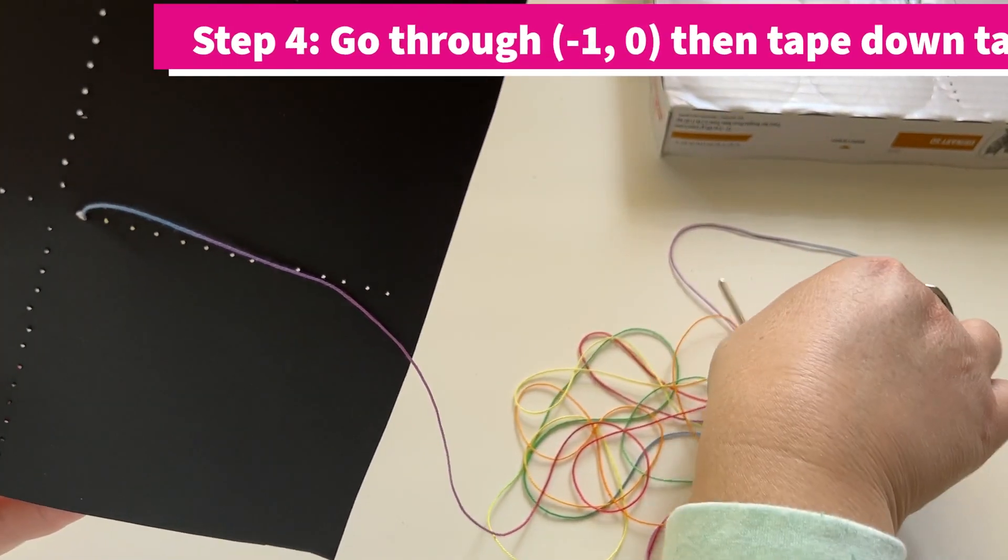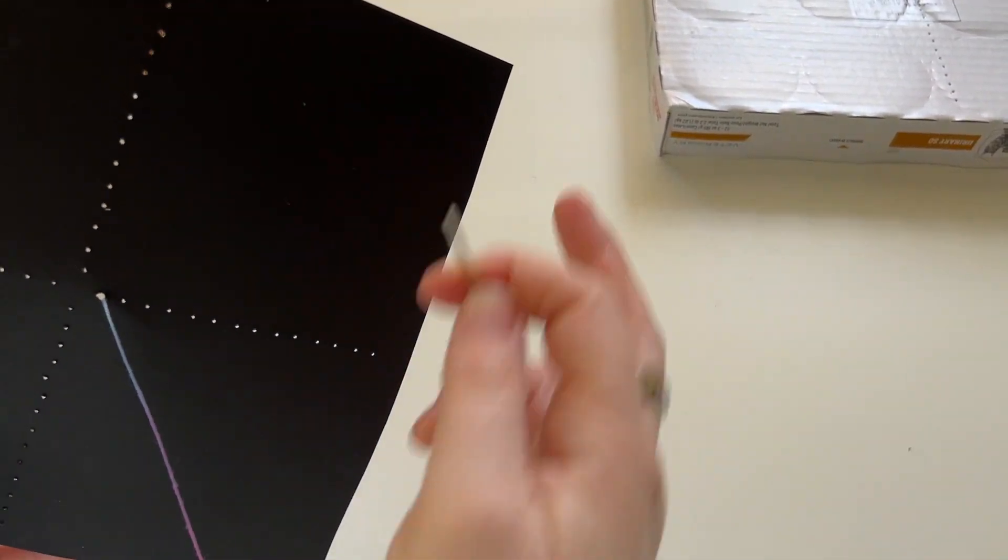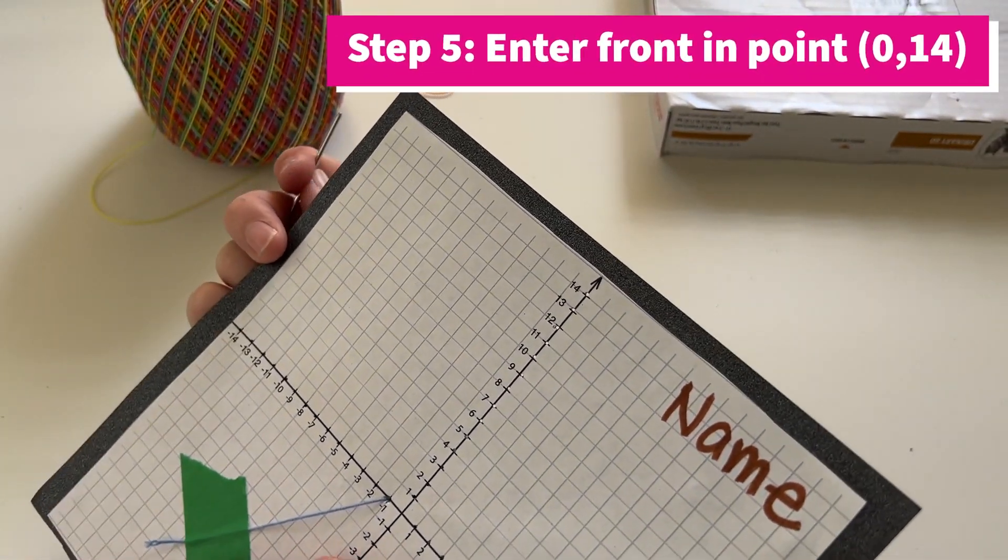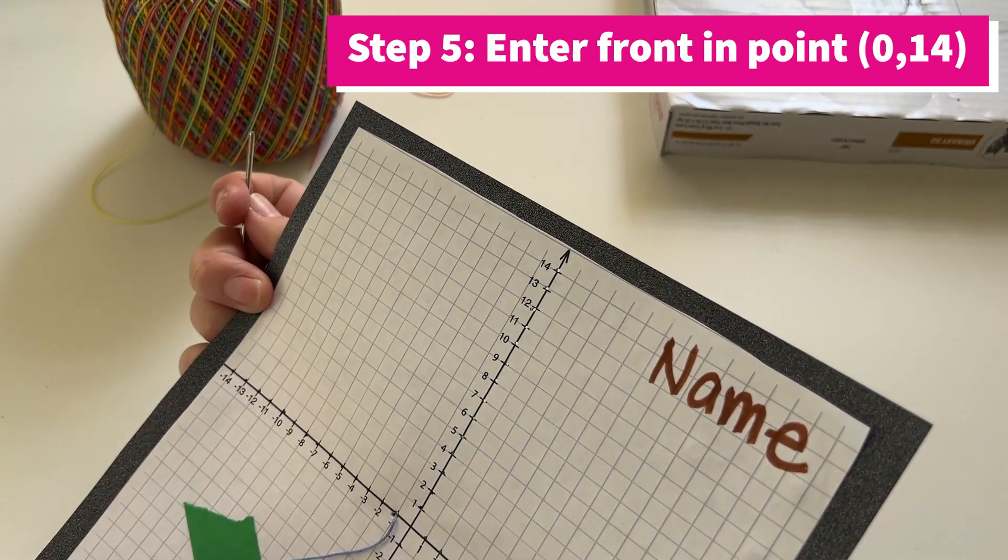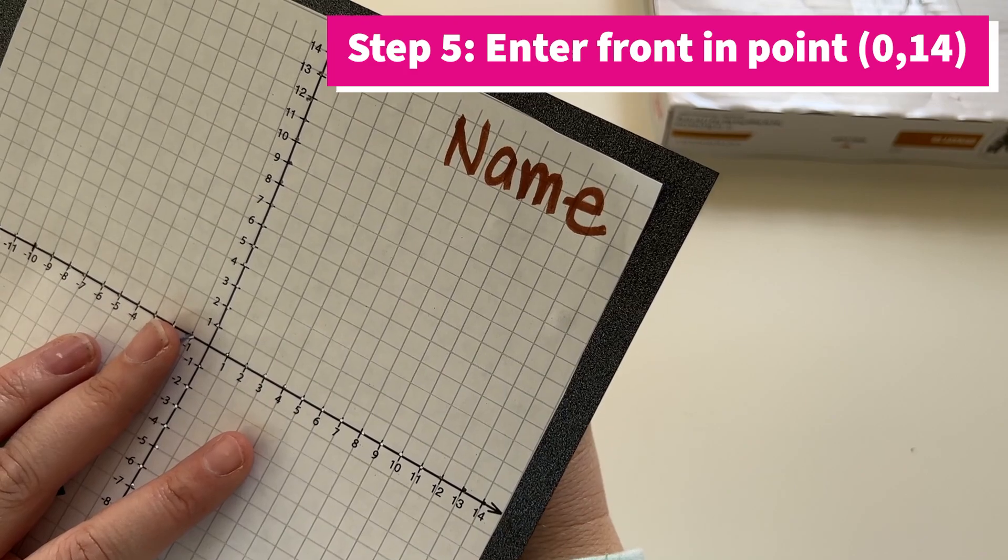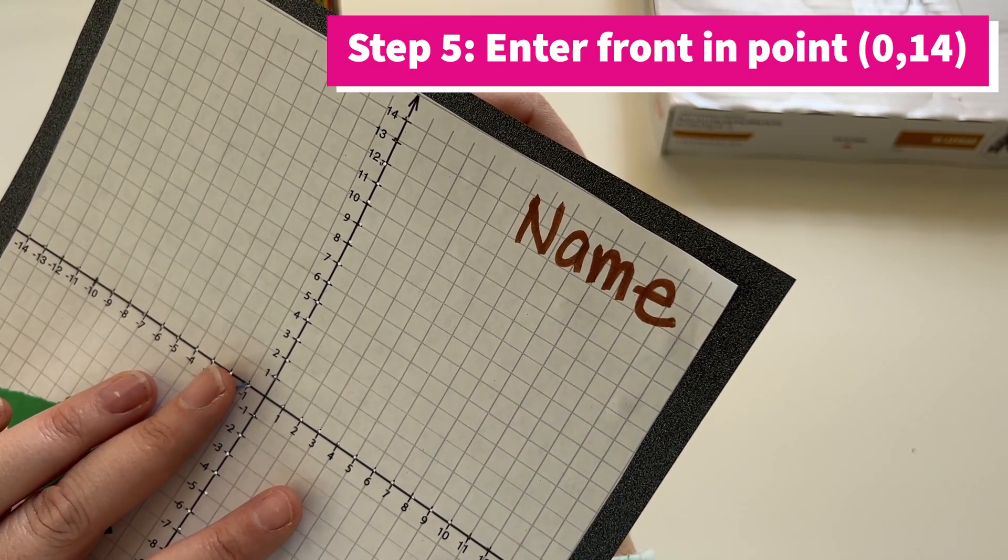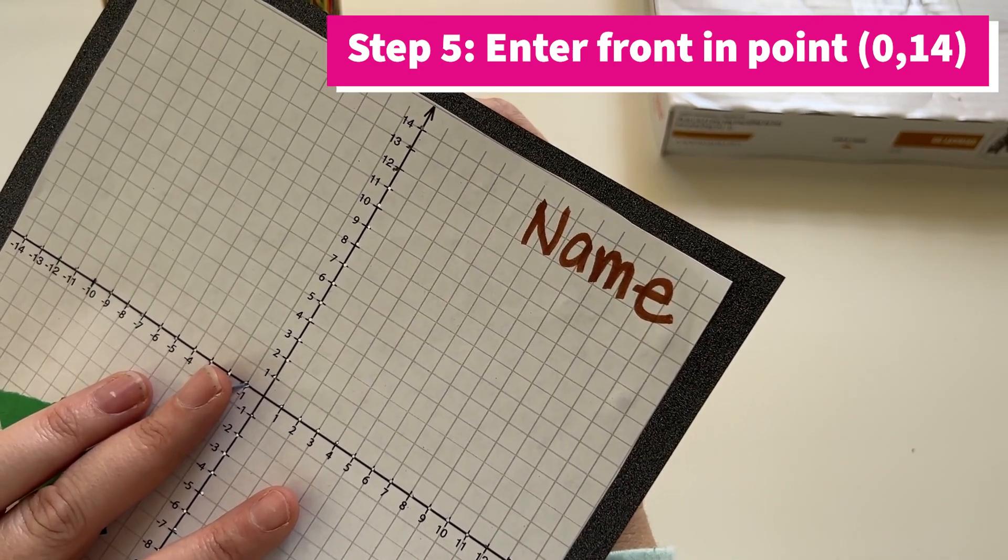You can see our poked holes and we're going to go in now through our first point on the y-axis. You're going to look at the back to make sure you're in the right place. So I went through negative one and then the first place we're going to go through is 14 on the y-axis, so that'd be coordinates of 0, 14.